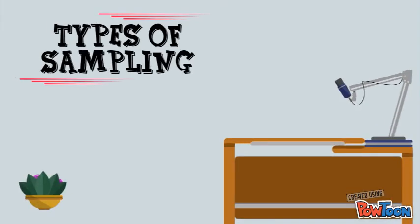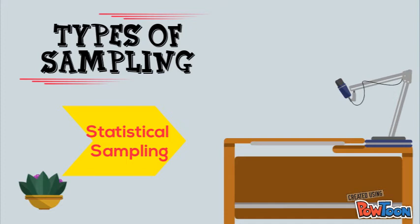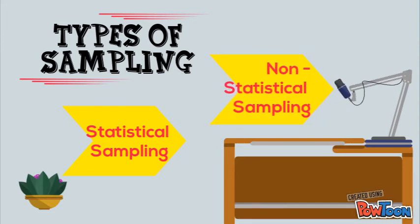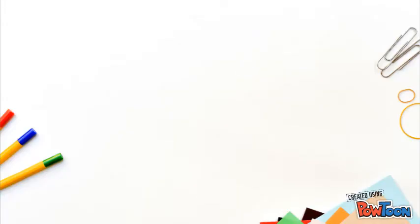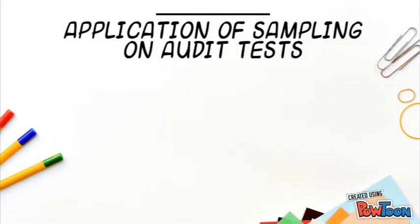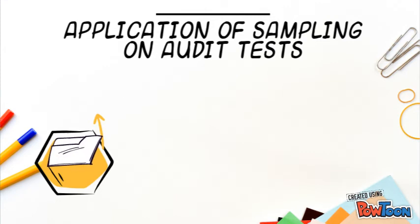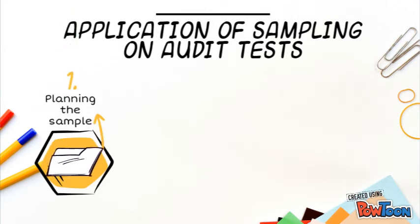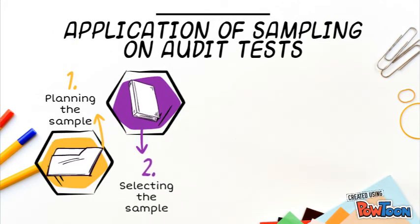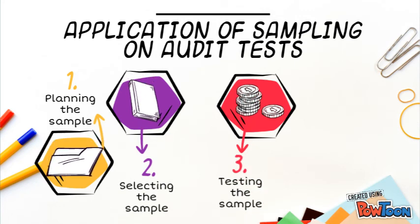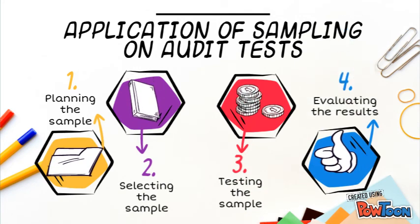There are two types of audit sampling. The first is statistical sampling, which is probabilistic sampling. The second is non-statistical sampling, which is non-probabilistic or judgmental sampling. Regardless of whether statistical or non-statistical, the common steps of applying sampling in audit tests are: first, planning the sample size; second, selecting the sample; third, testing the sample through vouching; and the last, evaluating the results through percentage of population and conclusion.